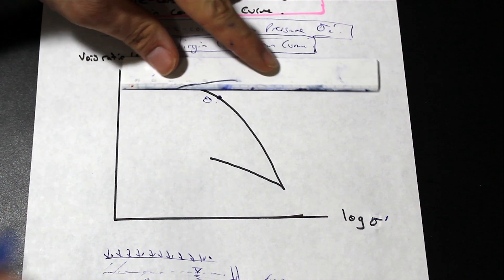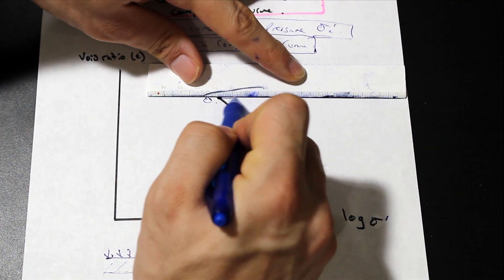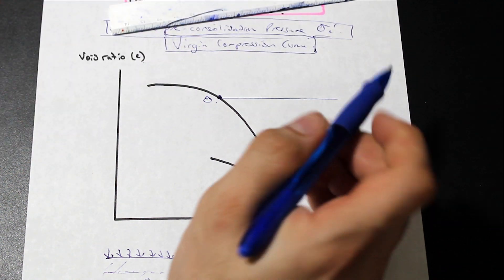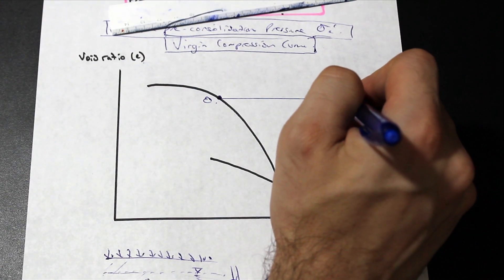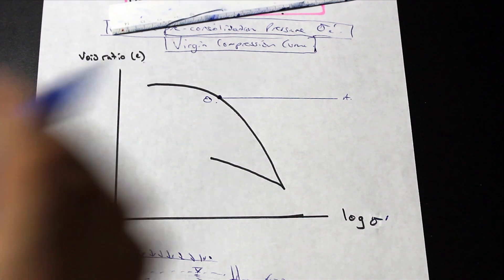So we're going to select that as point O. And what we're going to do is we're going to draw a horizontal line. So we're going to draw a horizontal line. We can call it OA. Call that line OA.